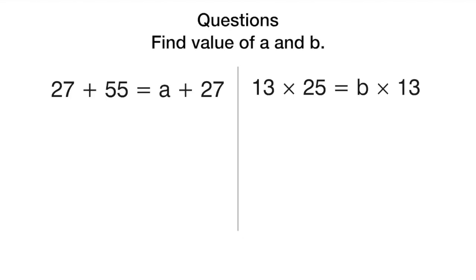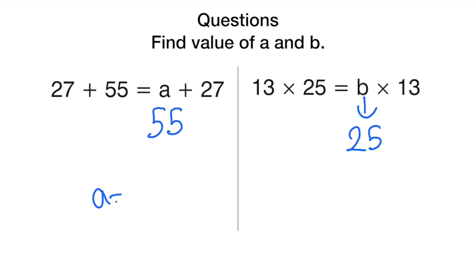Now let's look at some questions. In the first one, it says find the value of a and b: twenty-seven plus fifty-five equals fifty-five plus a, and thirteen times twenty-five equals b times thirteen. A is fifty-five and b is twenty-five.